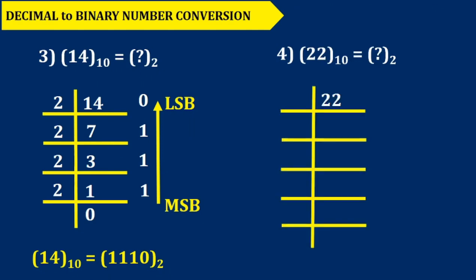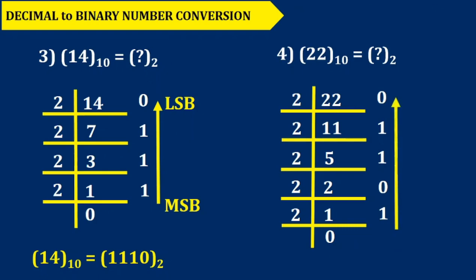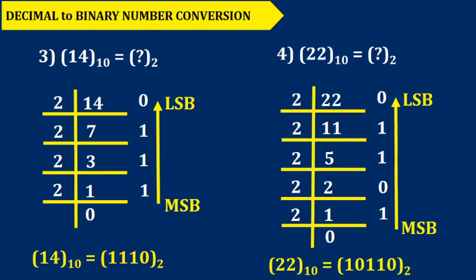Let's have a look at another problem. Here we are going to convert 22. 2 times 11 is 22, remainder is 0. 2 times 5 is 10, remainder is 1. 2 times 2 is 4, remainder is 1. 2 times 1 is 2, remainder is 0. And finally 2 times 0 is 0, we get 1. We collect it from downward to upward. The binary corresponding number of 22 is 10110.